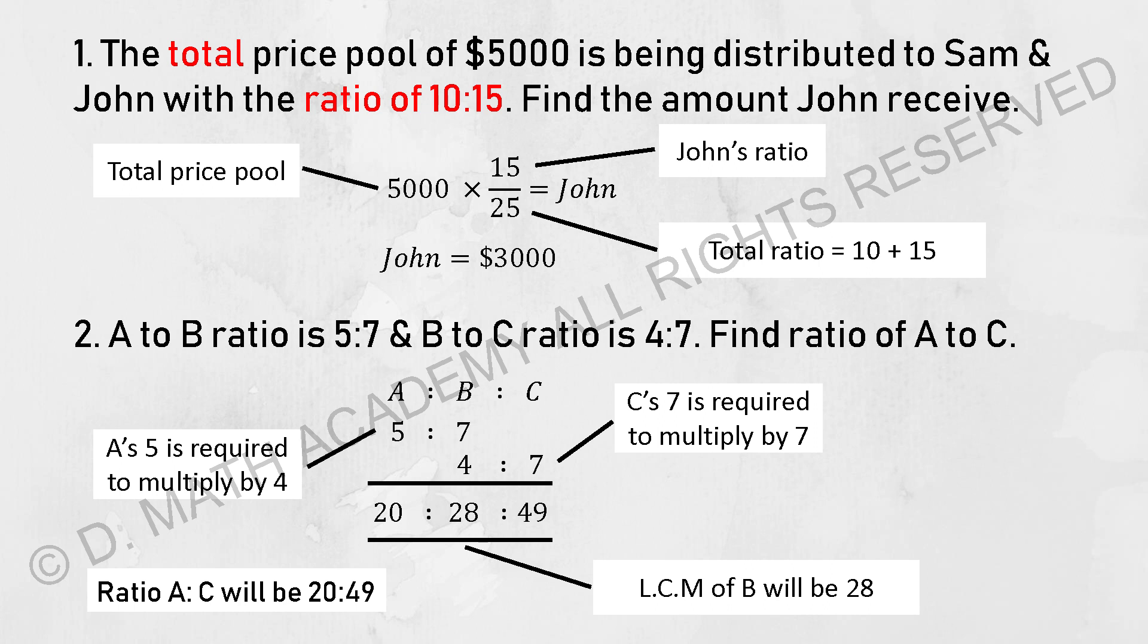So we will have 20 to 28 now. For the bottom part of the ratio which goes by 4 to 7, to change 4 into 28, we multiply it by 7. We have to do the same thing to its same set of ratio, which is C. So 7 times 7, you get 49.